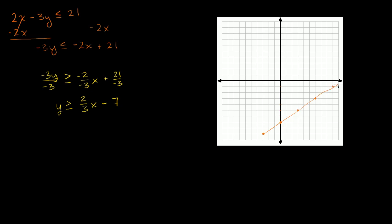Since we have y is greater than or equal to this line, the area that satisfies this inequality is going to be above the line. For any x you pick, 2/3 x minus 7 gives the line value, so y being greater than that means all the points above the line. This constraint — 2x minus 3y ≤ 21 — gives you all of that area above the orange line.